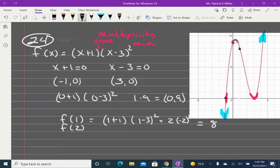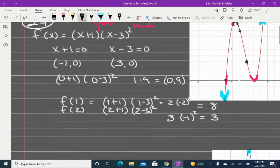What about 2? I'm going to have 2 plus 1 times 2 minus 3 squared. So that's going to give me 3 times negative 1 squared, which is going to give me a 3. So at 2, 3, kind of make sure that I am graphing it well. I'm going to do 25.